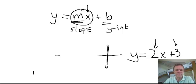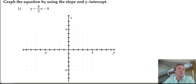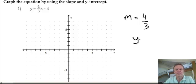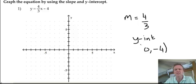So let's have a look at the actual question: graph the equation by using the slope and y-intercept. We have a slope m equal to 4 thirds — that's the number next to the x. We have a y-intercept, where it's going to cross the y-axis, of negative 4. We actually write that as the coordinate (0, negative 4) — it's 0 on the x-axis, negative 4 down the y-axis.